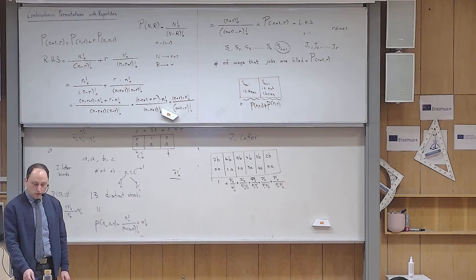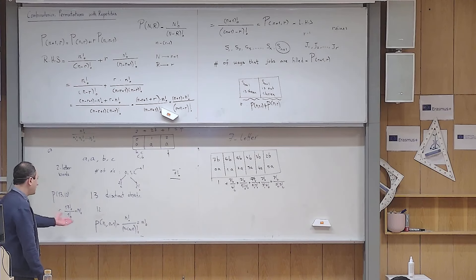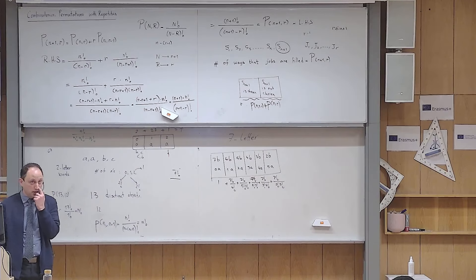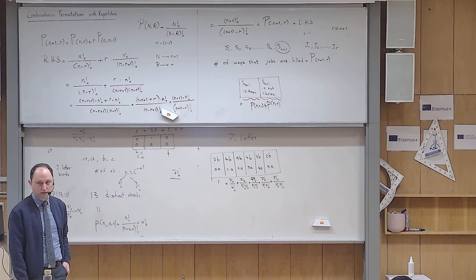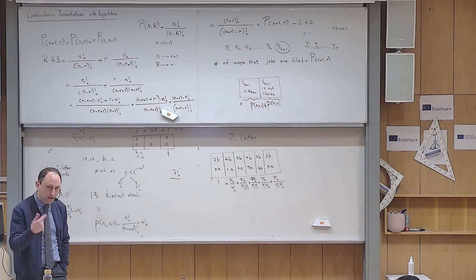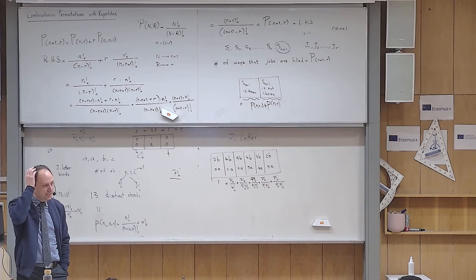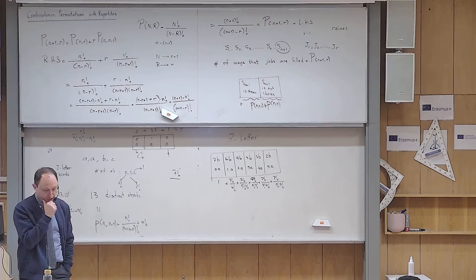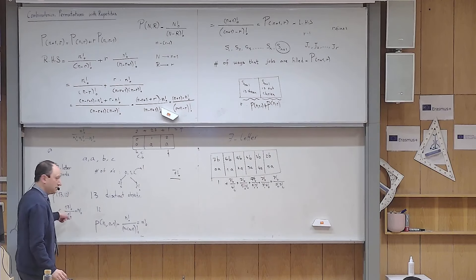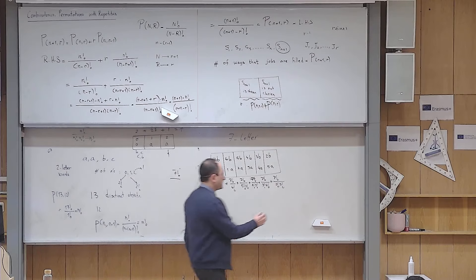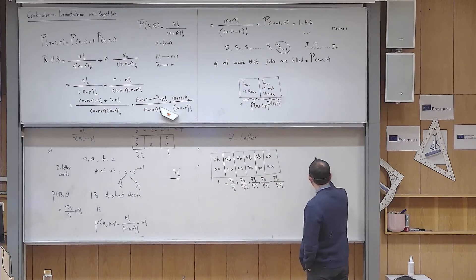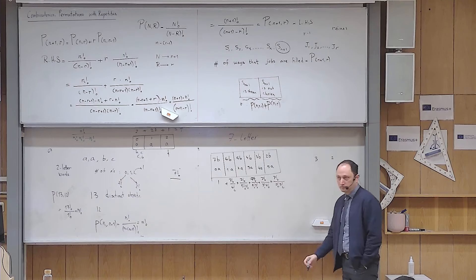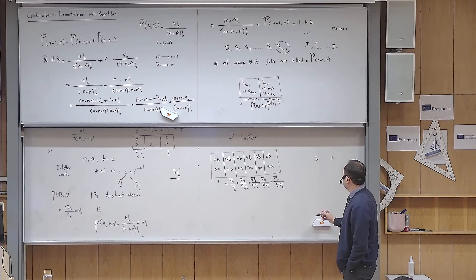Understanding why P(n, n-1) = n! is a very important insight. These numbers are large so let us start with small numbers: say n equals 3 and r equals 2, giving P(3,2) = 6 = 3!. The instructor invites students to think of a story proof for this general fact.